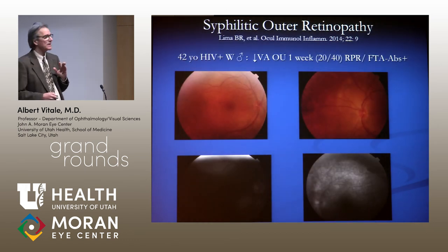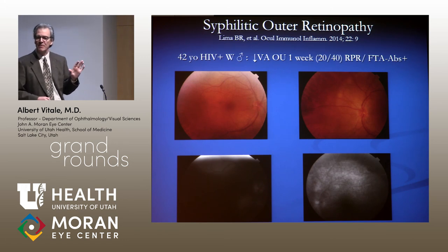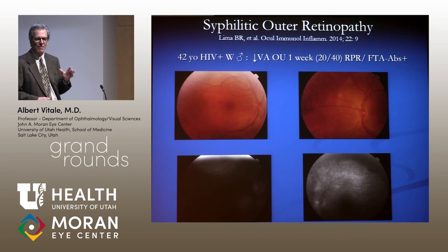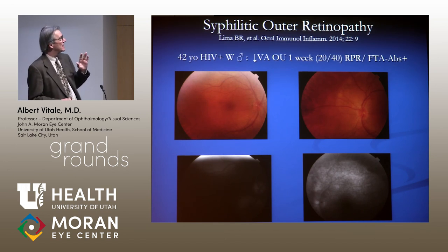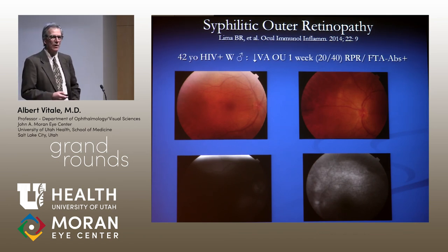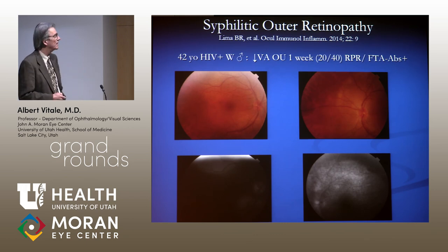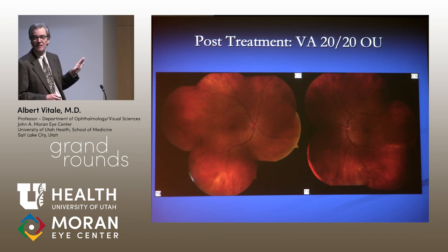A syphilitic outer retinopathy has also been described — curvilinear lesions initially thought to be AZOOR, but in many of these patients the RPR was positive. On close inspection, there is actually a placoid lesion, suggesting this outer retinopathy is a subtle variant of placoid chorioretinopathy, where ICG can be helpful. Post-treatment, complete resolution occurred in one patient, but that patient presented three years later with profound vision reduction and pan-uveitis — patients with syphilis can become reinfected.